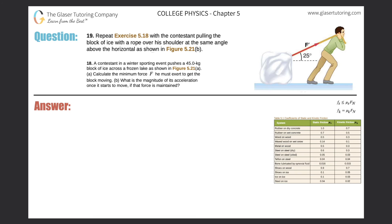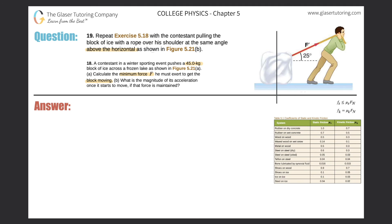Number 19: repeat exercise 5.18 with a contestant pulling the block of ice with a rope over his shoulder at the same angle above the horizontal as shown in figure 5.21b. The mass of the block is 45 kilograms. We need to calculate the minimum force F that he must exert to get the block moving. So the block is the object in question — we're trying to calculate the forces on it and find its acceleration.